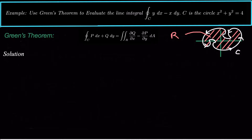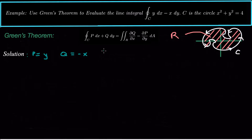So what we need to do is identify the pieces of our vector field. Here P is the component multiplied by dx, so P equals y. And Q equals negative x. Then we need to take the partial derivatives to convert this line integral into a double integral. Partial Q partial x is negative 1, and partial P partial y is 1.